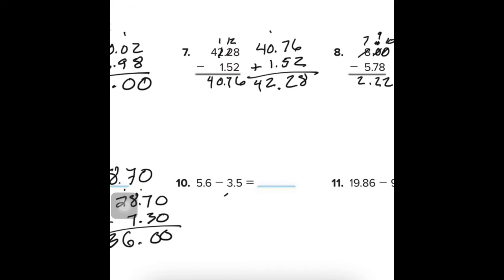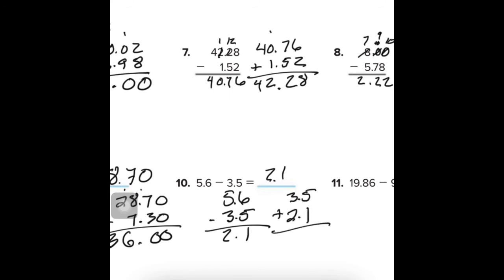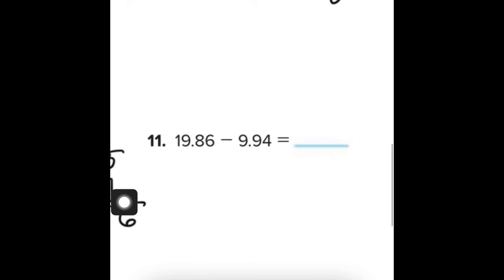Number 10: Line them up. We have 5.6 minus 3.5. Line up your decimals, then subtract the place values. 5 from 6 is 1, 5 minus 3 is 2 — so the answer is 2.1. Bring down the decimal. Adding back gives 5.6, which is our original number. We are good.